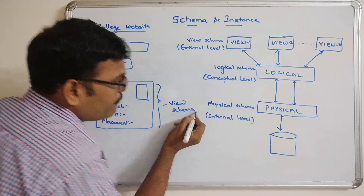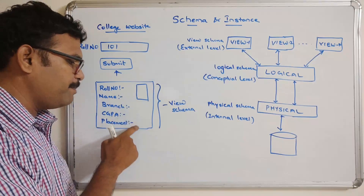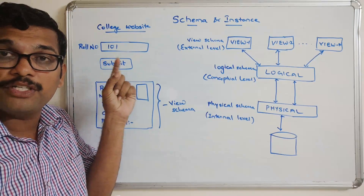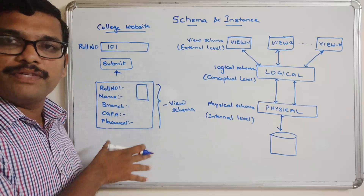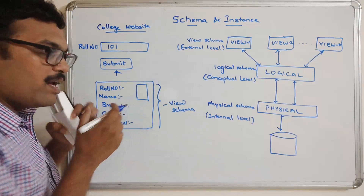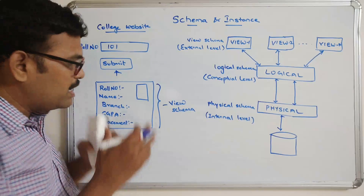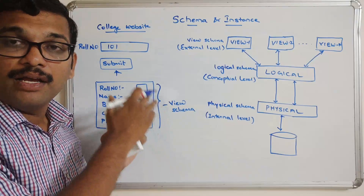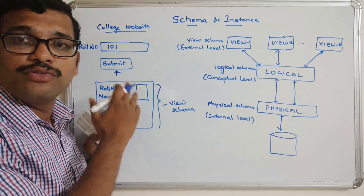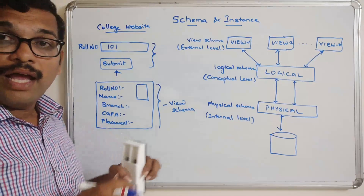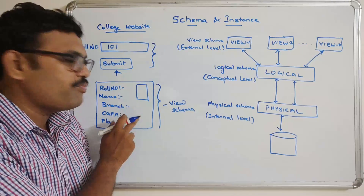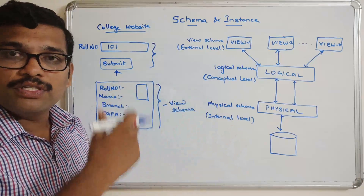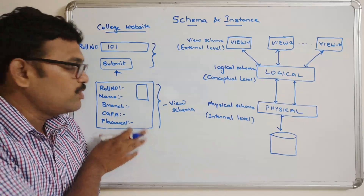From where are we getting roll number, name, branch, CGPA, placement details, and the photograph? Here the input is only the roll number, but we get the complete profile of the student. Whatever profile is visible to the user, that is called the view schema. The data is not stored in the database in this format — it is stored in a different format — but from the user's view, we get it this way.